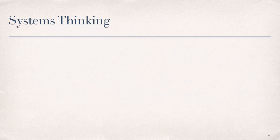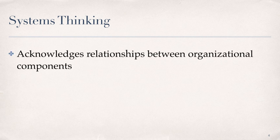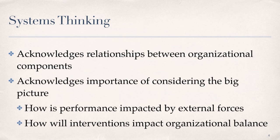We've talked a lot about systems thinking in this course and indeed the HPT model is grounded in systems thinking principles. Systems thinking acknowledges the relationship between the organizational components as we saw in your discussions related to the glass manufacturer case study. Systems thinking also acknowledges the importance of having a macro view or big picture view of the organization in terms of how performance is impacted by external forces such as market demand as well as consideration for how the chosen interventions may impact organizational balance from a systems perspective.